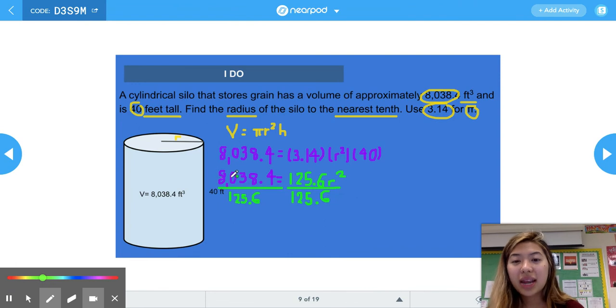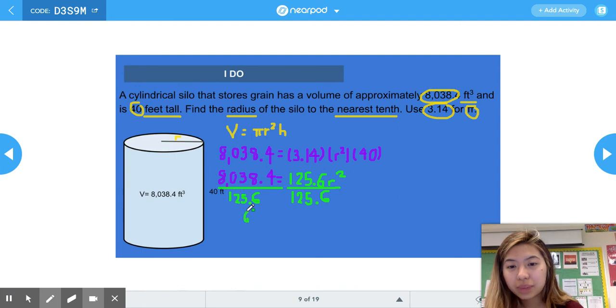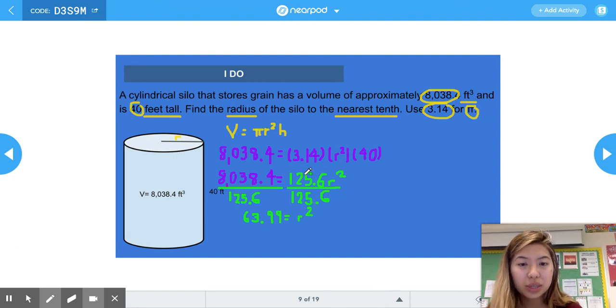When we divide 8,038.4 divided by 125.6, we get 63.99 = r². Because the number divided by itself is always 1, so we can cross that out.